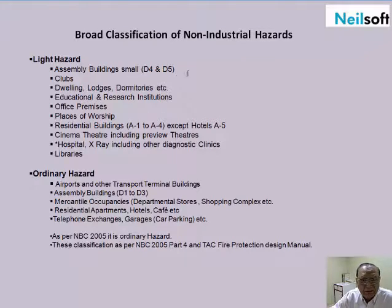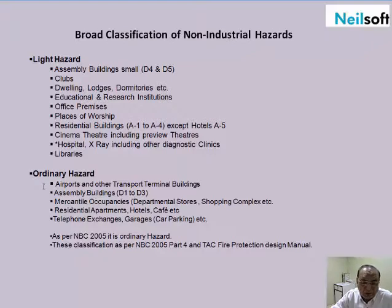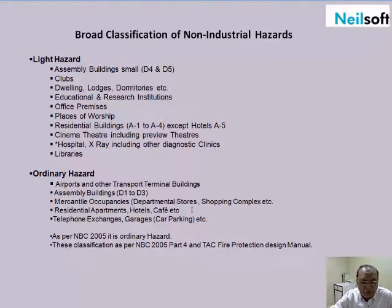Assembly buildings are classified in the D4 and D5 sections of NBC Part 4. These include ordinary hazard occupancies such as airports and other terminal buildings, and assembly buildings in categories D1 to D3. Residential apartments may fall outside light hazard due to restrictions on height and volume of buildings.